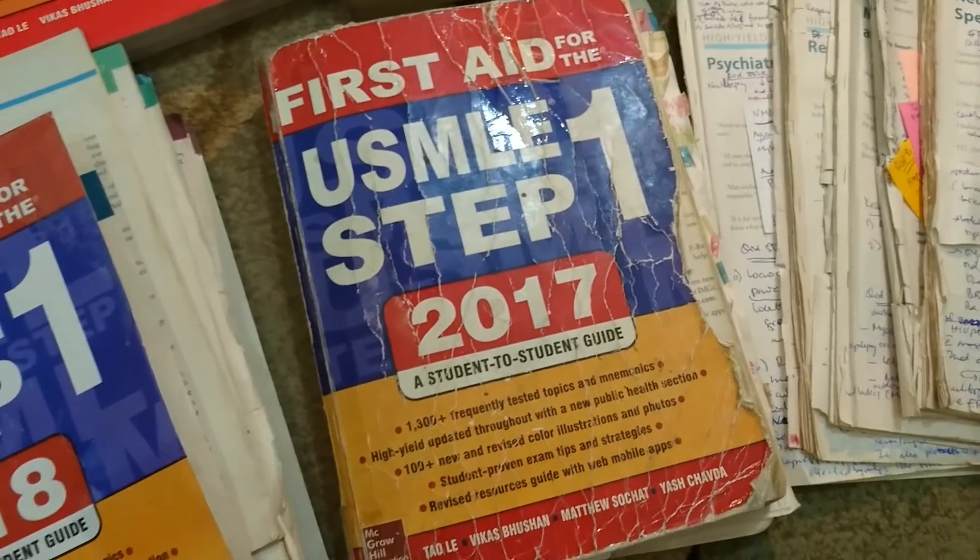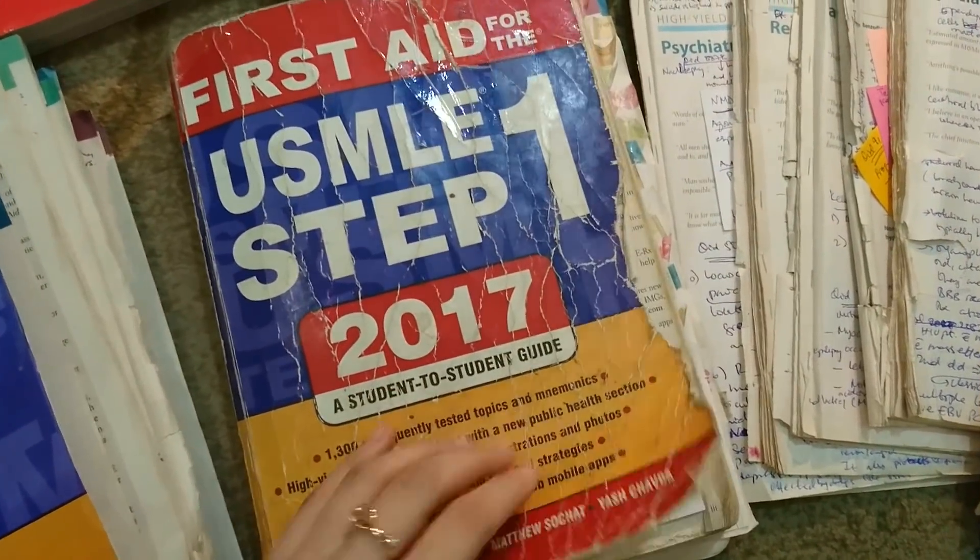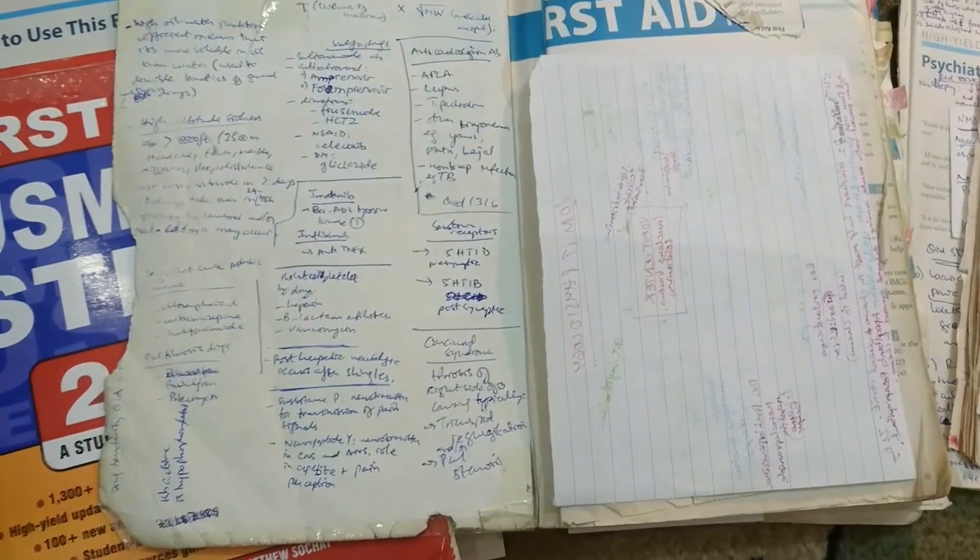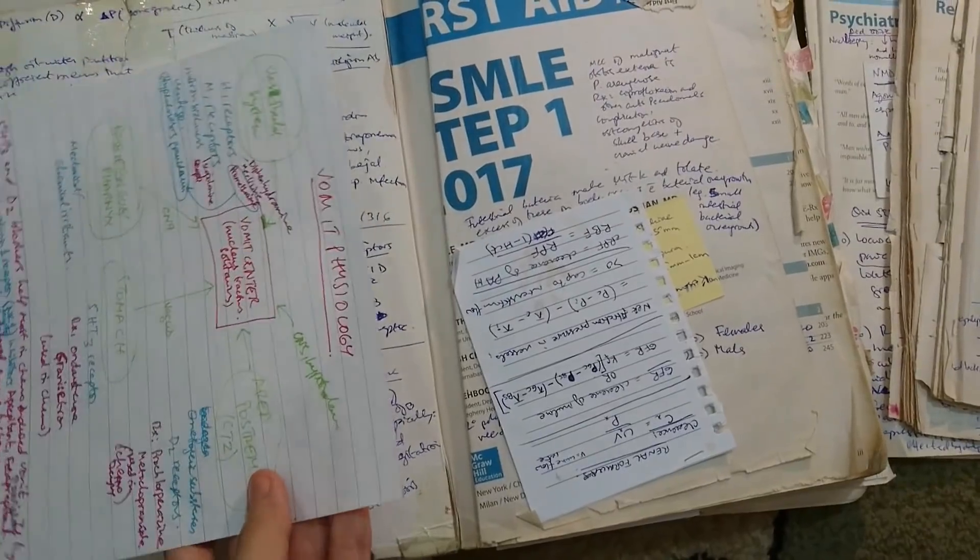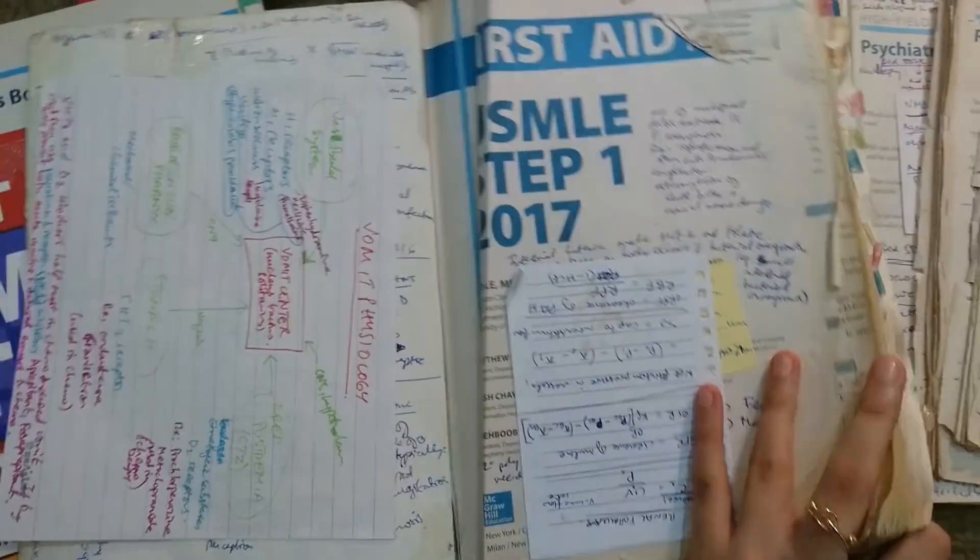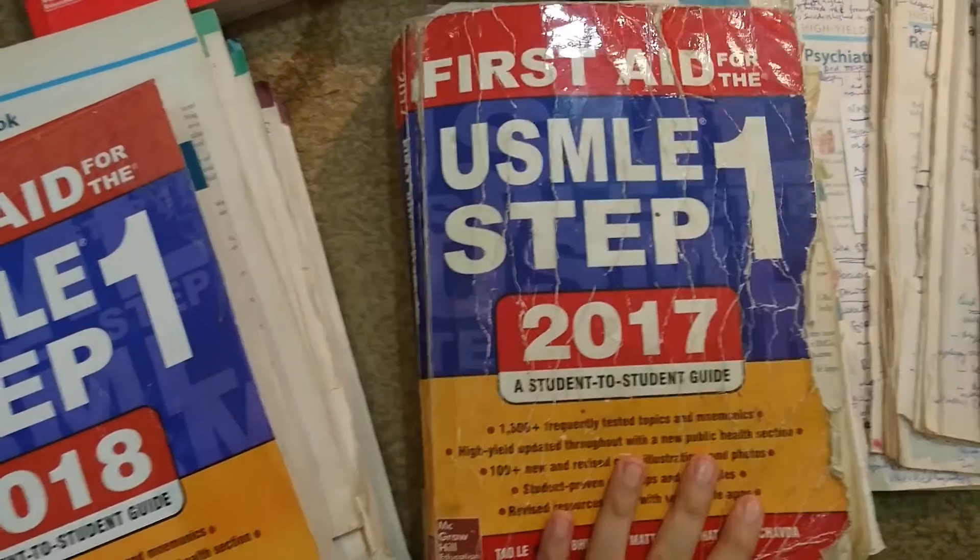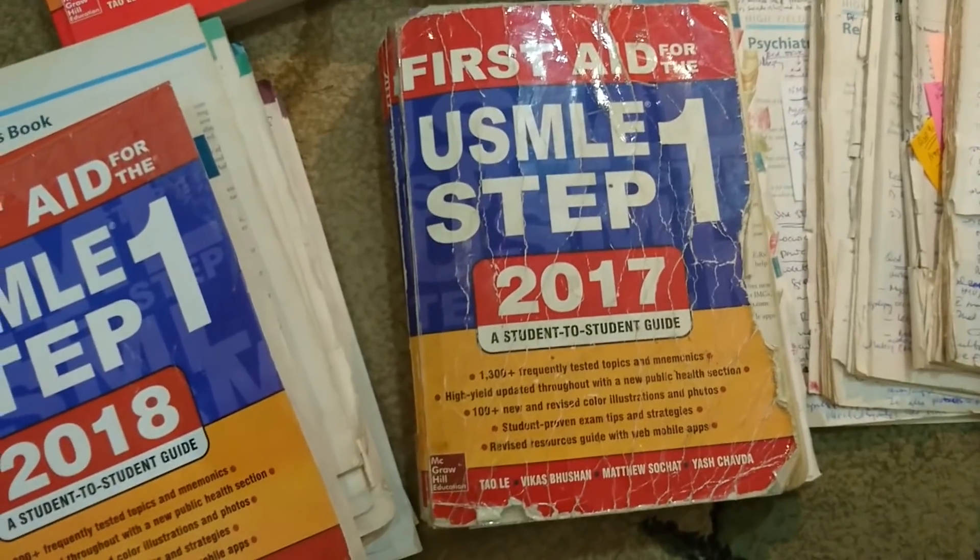There would be a few things that I would read that I would think are high yield but I wouldn't find a place to put them in the book. So I would just go ahead and put it on the first page of my book, or I would just make a note about it and put it over here or maybe at the end.